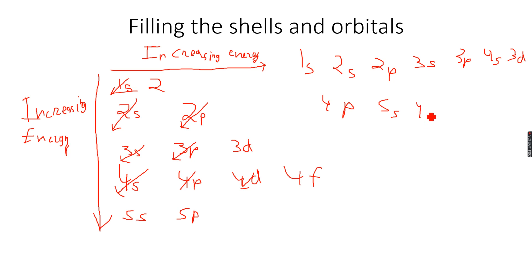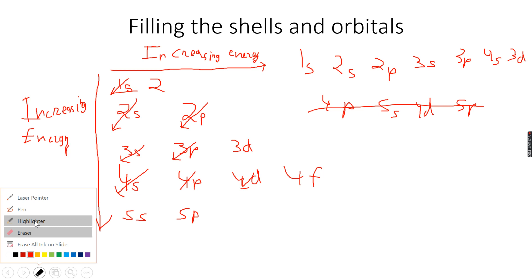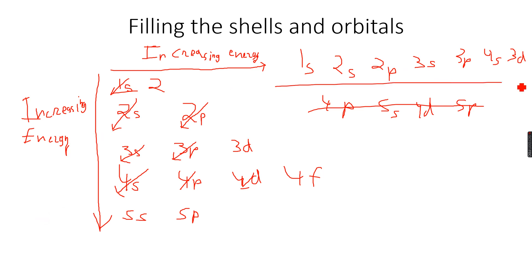You can see how we are filling these orbitals. We are not going beyond 4s in this lesson, so I'm cancelling the rest out — that was just to explain the concept. This is the order in which orbitals fill: 1s, 2s, 2p, 3s, 3p, 4s — and 3d will also be there because it's in the third shell.